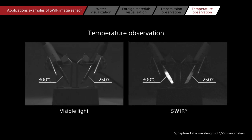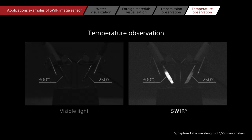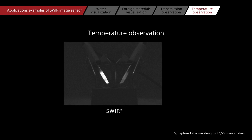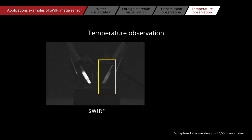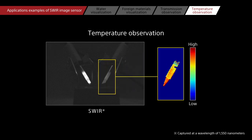This example shows the difference between 250 and 300 degrees. This allows SWIR imaging to be used for monitoring the temperature of wells and other hot areas.